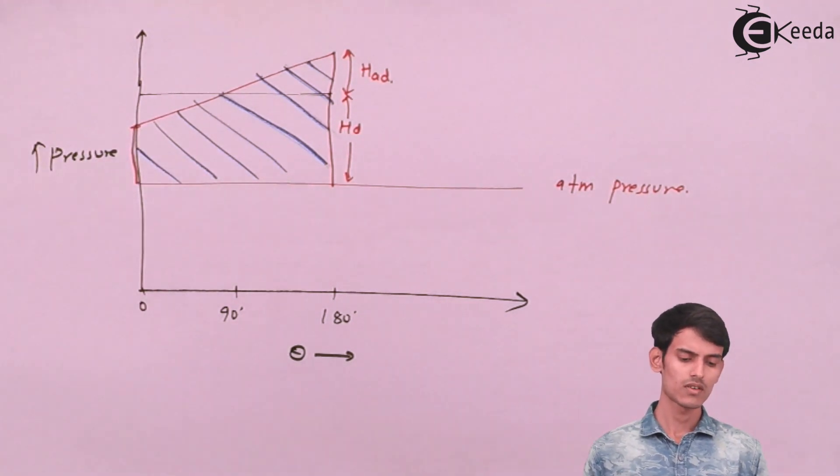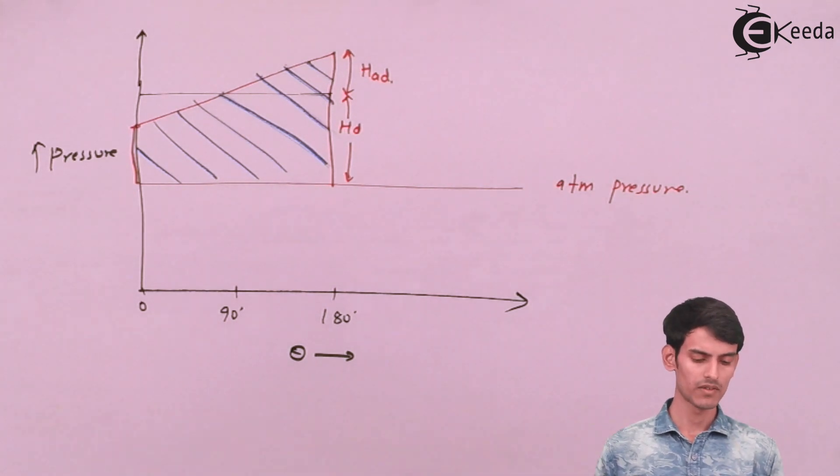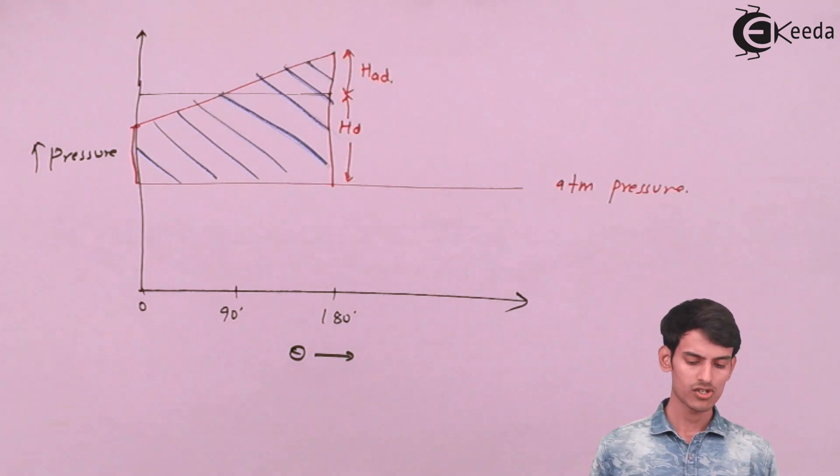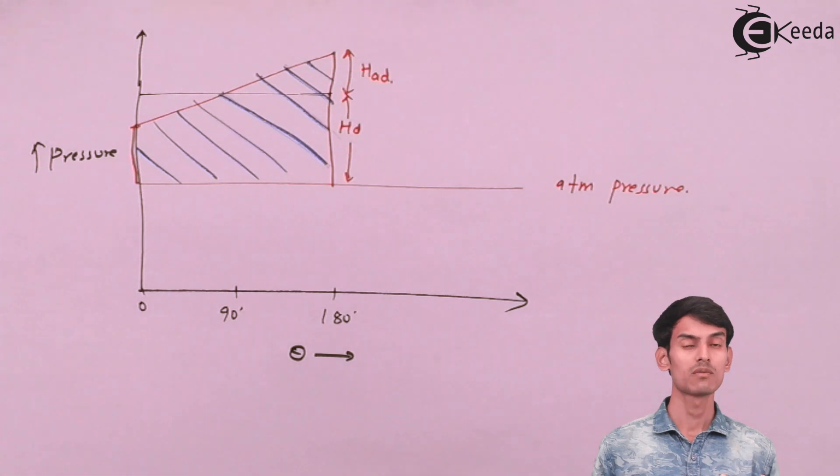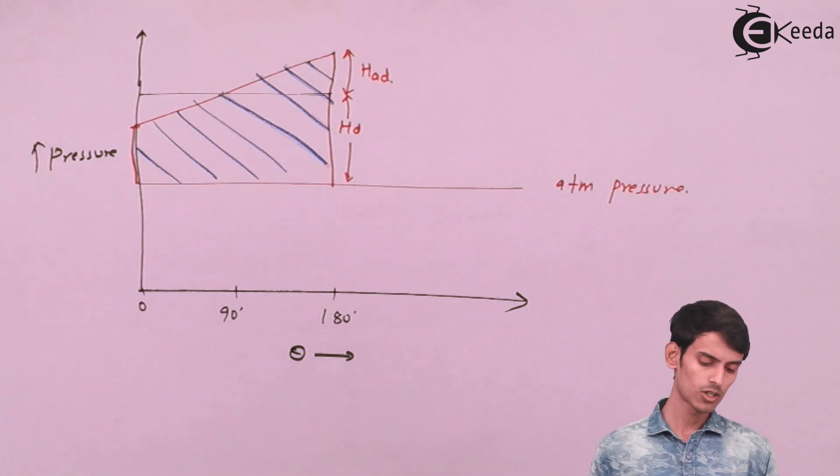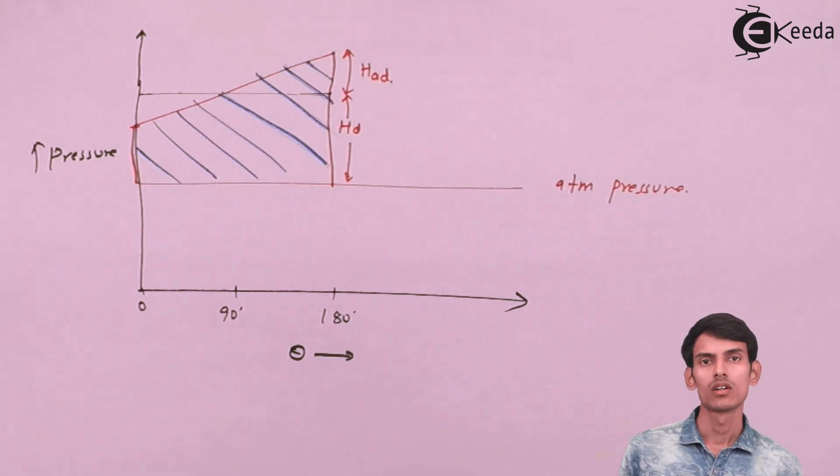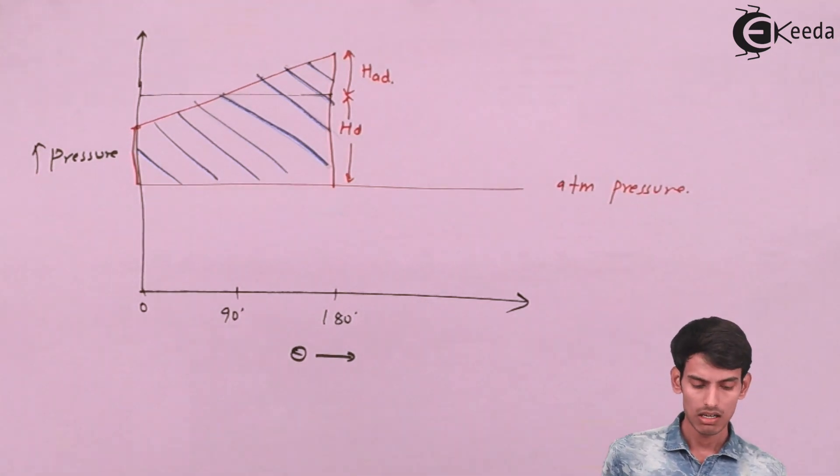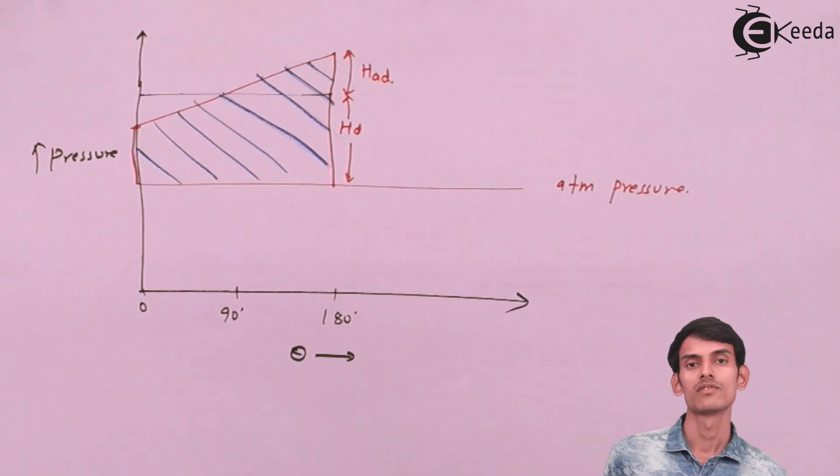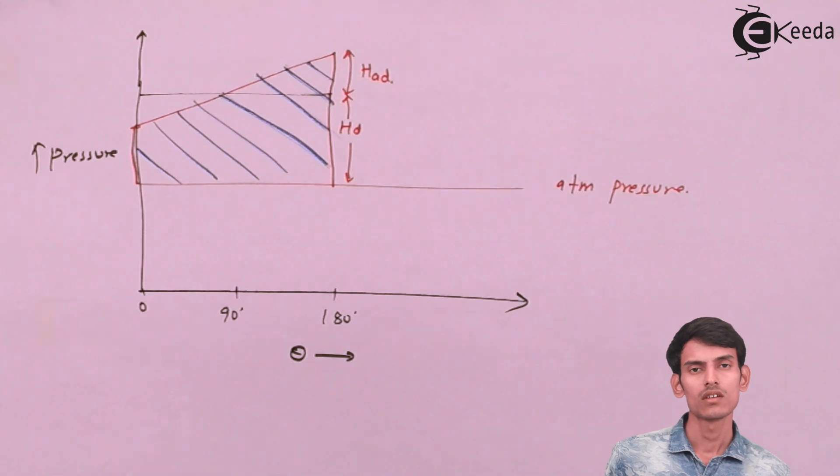This is the graph of the indicator diagram at the delivery end. At the delivery end, the pressure has to be above atmospheric. At the suction end, everything was below atmospheric pressure because everything is working in a vacuum, and at the delivery end everything is above atmospheric pressure. Now we will club both the graphs and see how the whole indicator diagram looks.